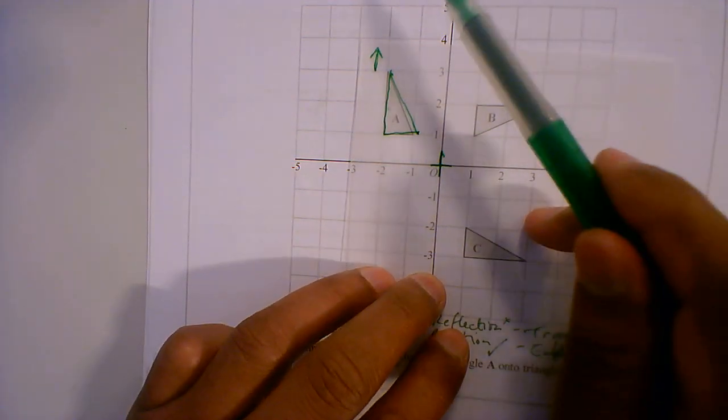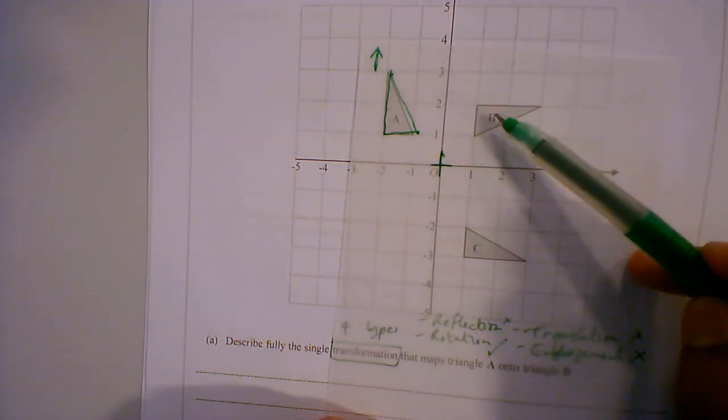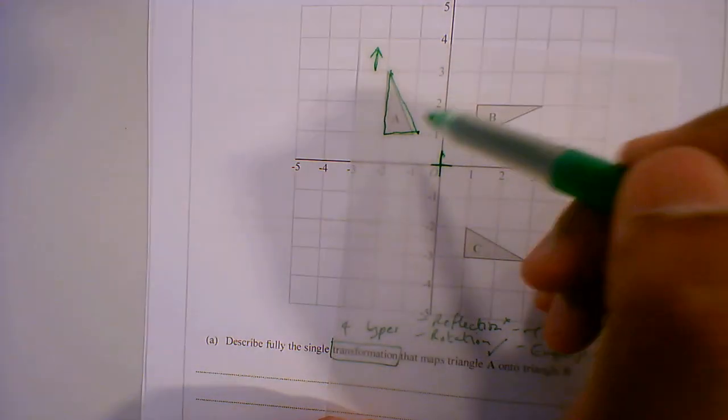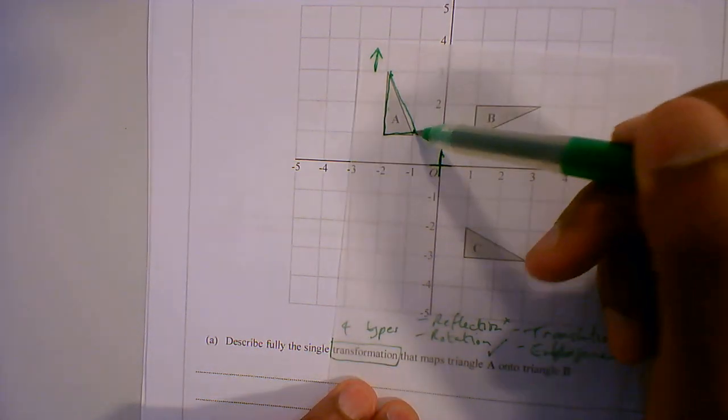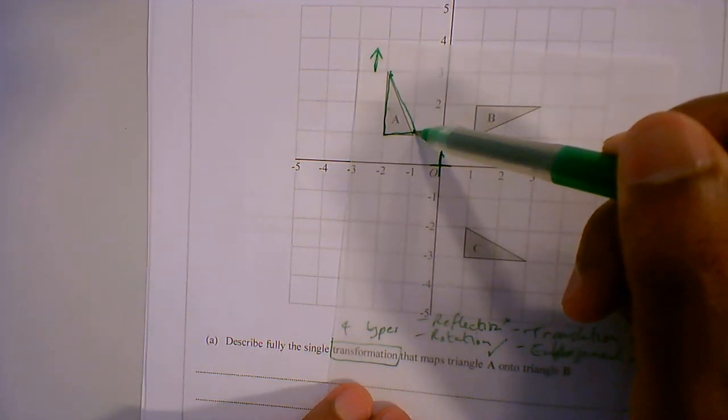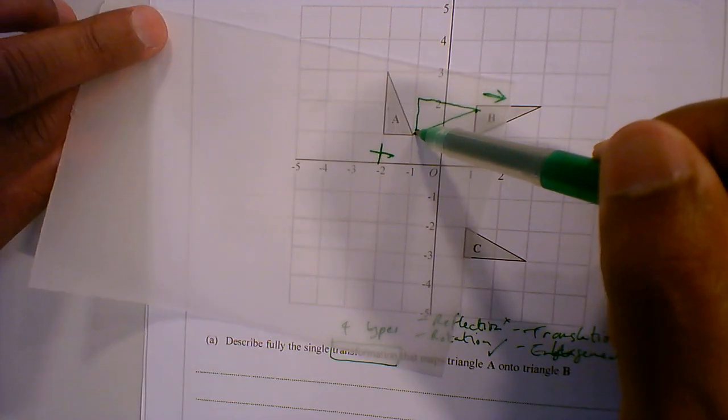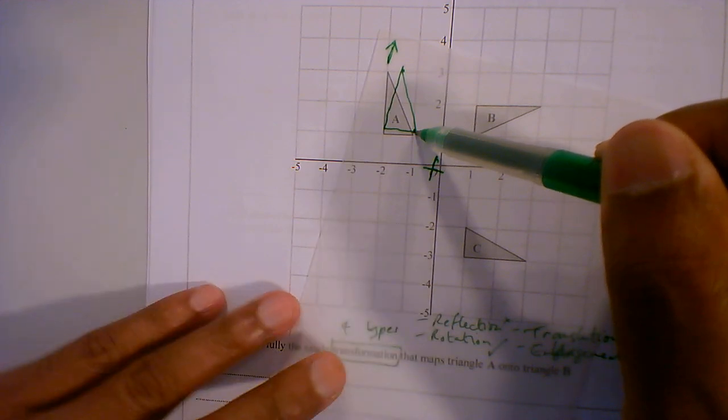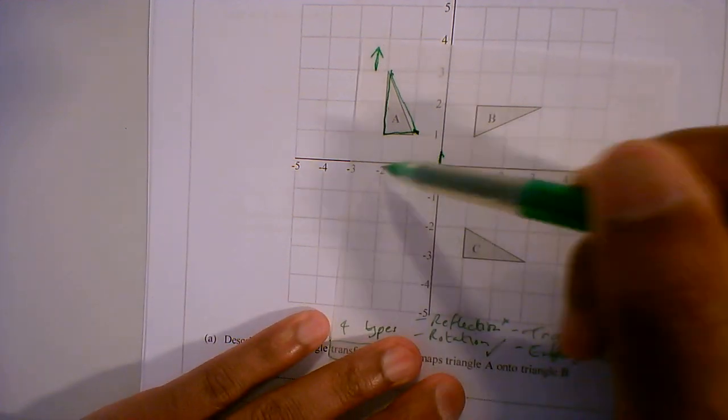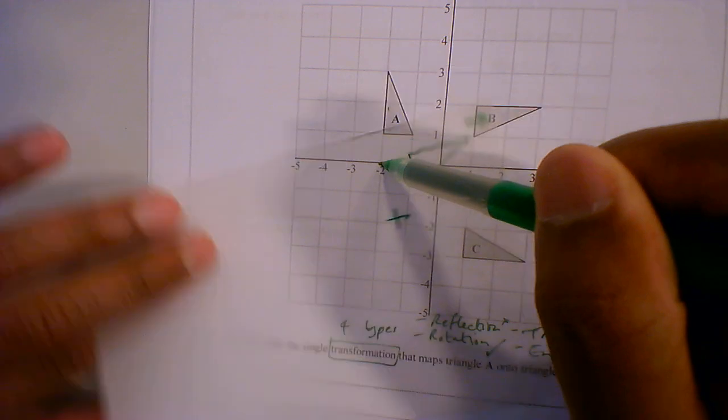Now I want to rotate A so that it maps onto B. So if I fix a point here, you can see where the pen is pinning down. Now, if I rotate this, it doesn't map onto B, so I have to move my pen around, my center of rotation. I have to move it around until it gets to B.